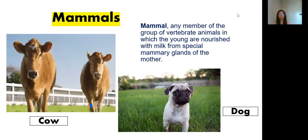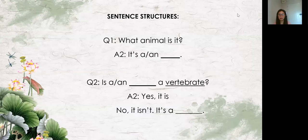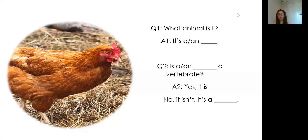So these are the examples of mammals. Now I have some questions — I want to know if you really understood the topic. For example, I will ask: what animal is it? Your answer should be: it's a or an blank. Question number two: is it a vertebrate? Your answer should be: yes it is, or no it isn't. Let's try: what animal is it? — It's a chicken. Very good. Next question: is a chicken a vertebrate? — Yes, it is. Very good.